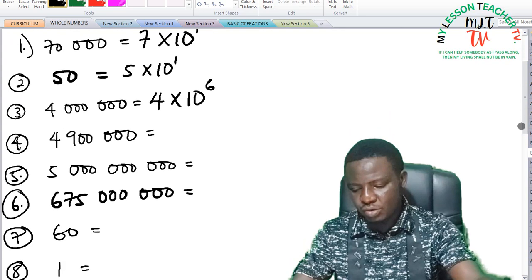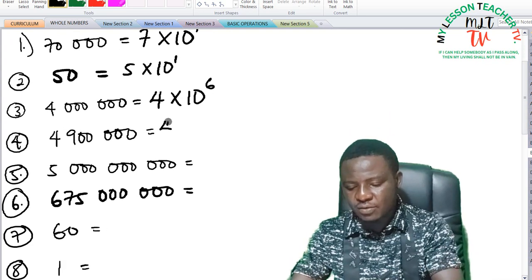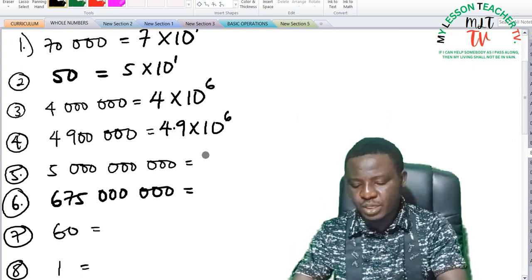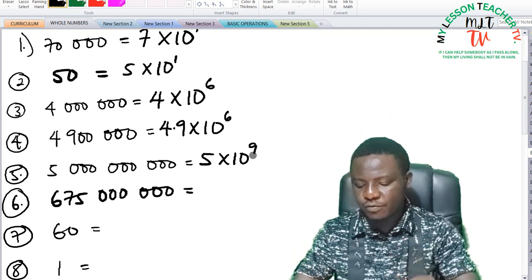4,900,000 can be expressed as 4.9 times 10 raised to the power of 6, and 5,000,000,000 can be expressed as 5 times 10 raised to the power of 9.